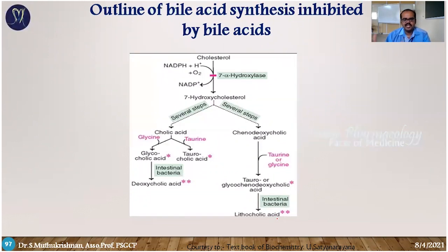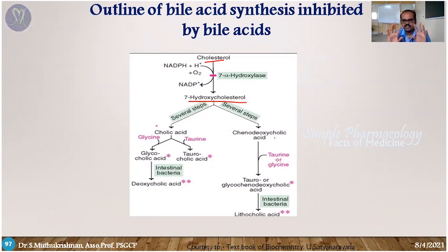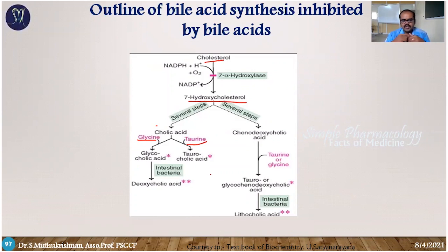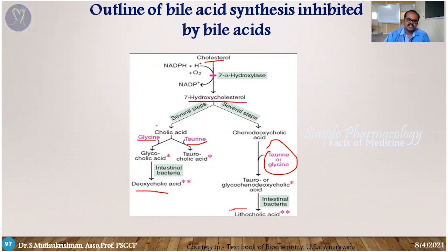Looking at the overall diagram of bile acid synthesis: cholesterol is first converted into 7-hydroxycholesterol, which then divides into two pathways — one forming cholic acid and the other forming chenodeoxycholic acid. These are the two primary bile acids. They combine with glycine or taurine to form glycocholic acid or taurocholic acid. Intestinal microflora bacteria then degrade these to form deoxycholic acid and lithocholic acid, which are the final bacterial metabolic end products.